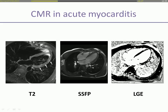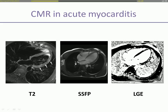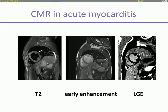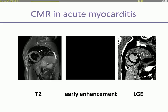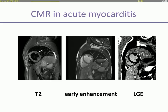The same can be seen using late gadolinium enhancement, with those islands of high signal intensity in the mid-wall and in the sub-epicardium. These are the corresponding short-axis images at mid-ventricular level. Again, early enhancement and late enhancement, typically in the mid-wall.